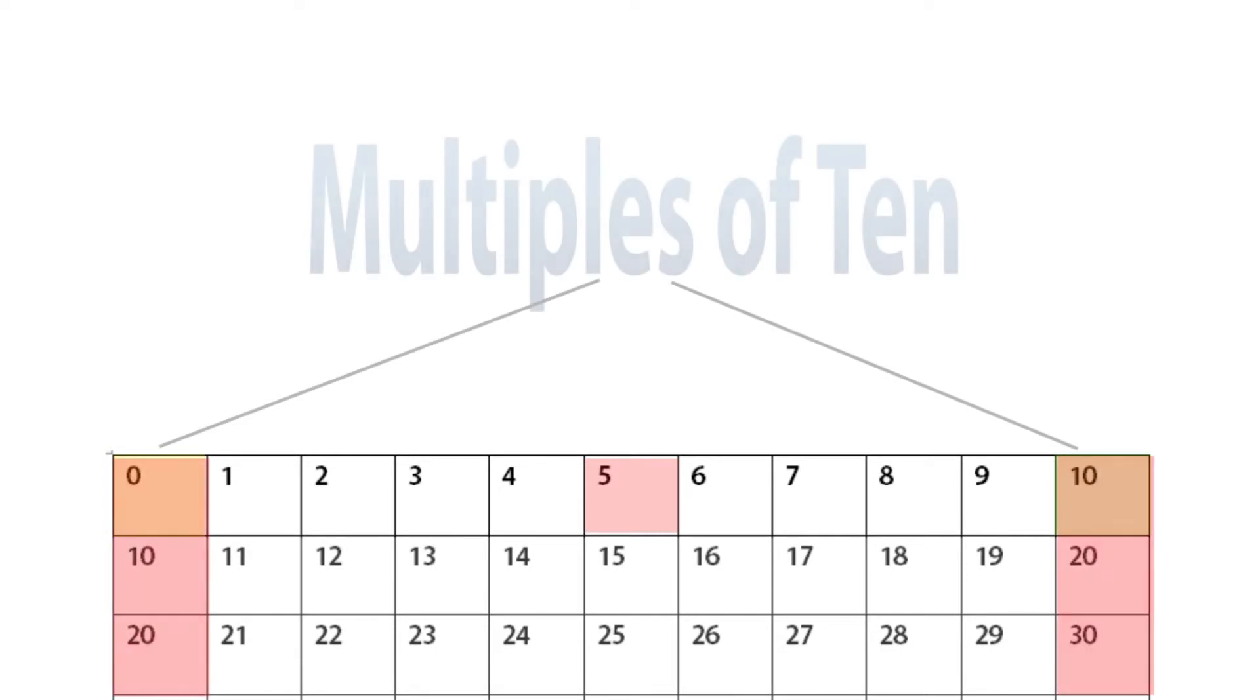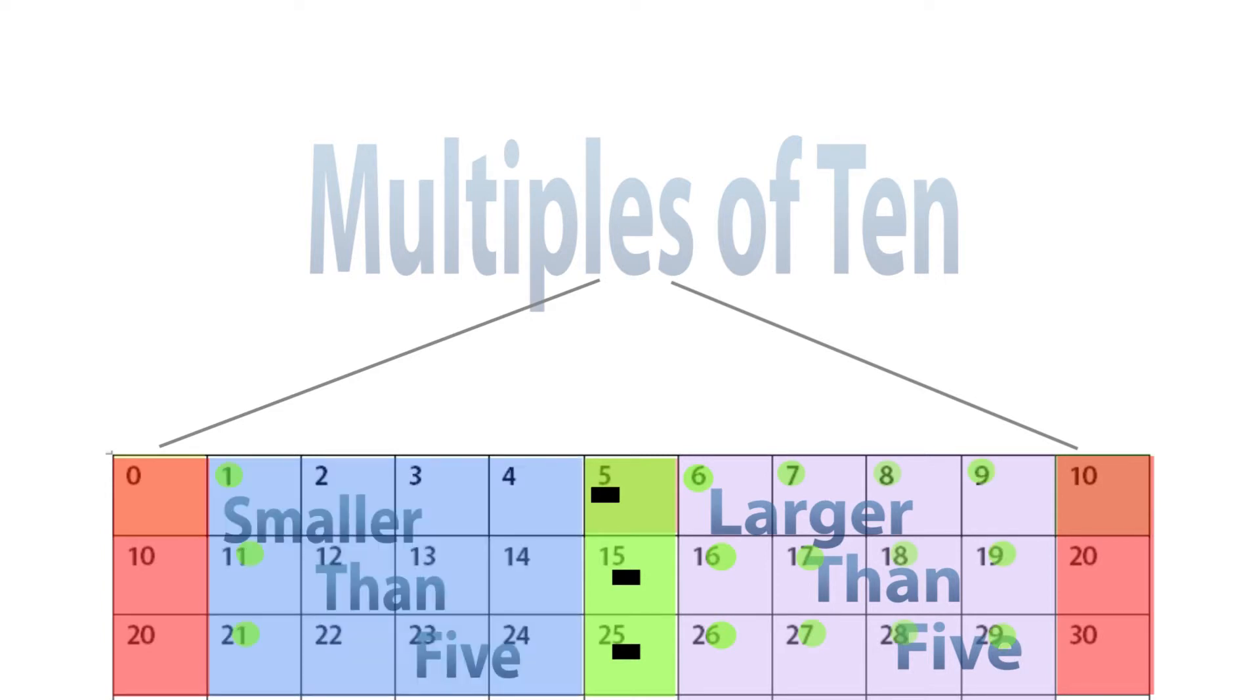Between every multiple of 10, you'll see that 5 is directly between the two numbers that end with 0. And the numbers that are larger than 5 end with 6, 7, 8, or 9. And the ones that are smaller end with 1, 2, 3, or 4.